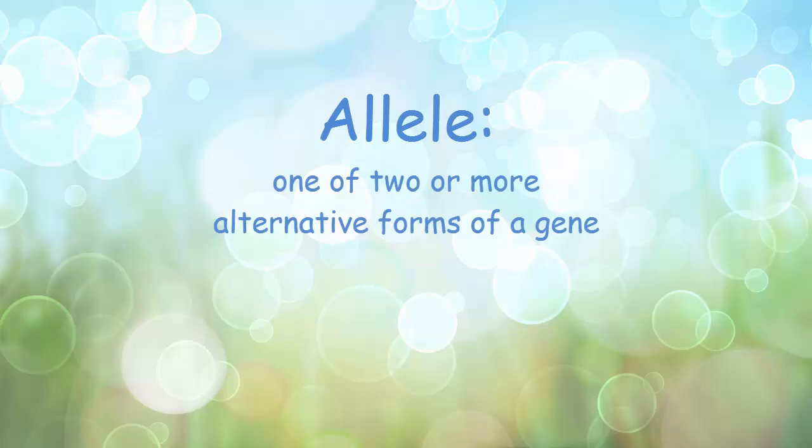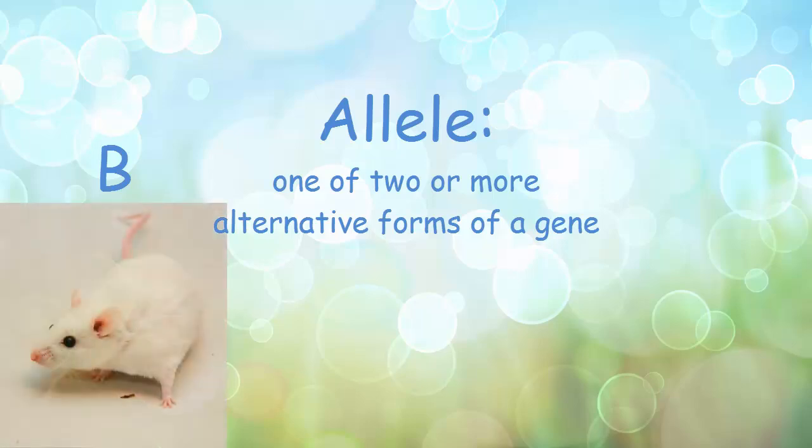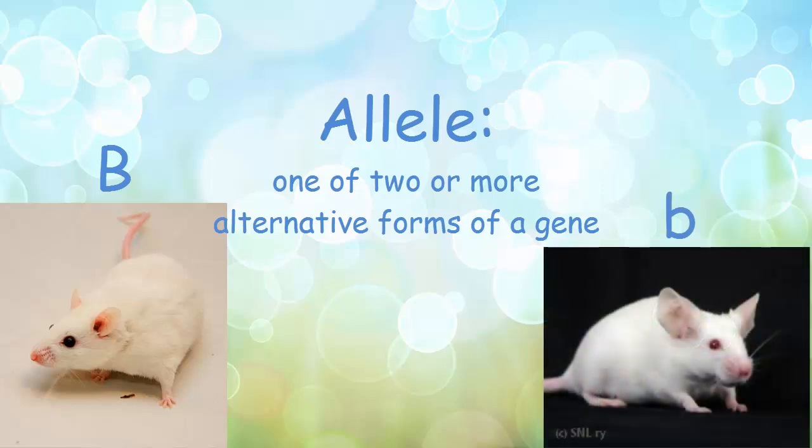Let's start with some basic terminology: allele. What is an allele? It's basically one of two or more alternative forms of a gene. So for example, in mice, capital B codes for black eyes, and a lowercase b is for red-eyed mice. These are some different forms of an eye color gene. These are two different alleles.